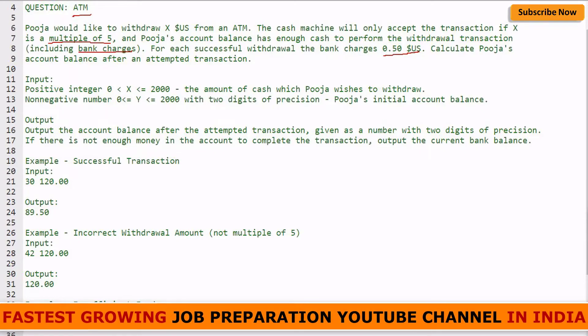Calculate Pooja's account balance after an attempted transaction. The input is a positive integer X which will be between 0 to 2000, the amount of cash which Pooja wishes to withdraw. You have to set the limit minimum at zero and the maximum can be 2000.